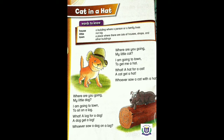Let's start Words to Know. House, yani ke ghar — a building where a person or a family lives, aisi imarat jahaan per shaks aur handaan rahen. Little, chota — not big, yani ke bada na ho. Town, kasba shahir — a place where there are lots of houses, shops and other buildings.